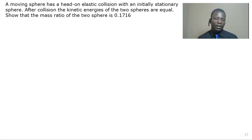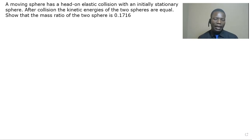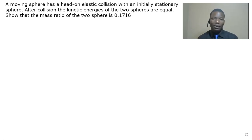So a moving sphere has a head-on elastic collision with an initially stationary sphere. After collision the kinetic energies of the two spheres are equal. Show that the mass ratio of the two spheres is 0.1716.